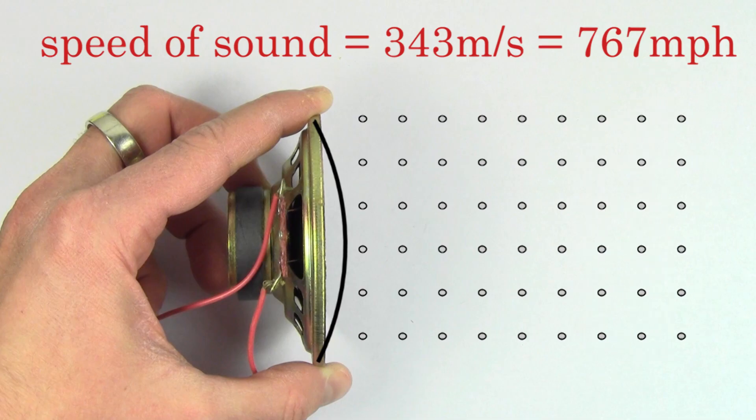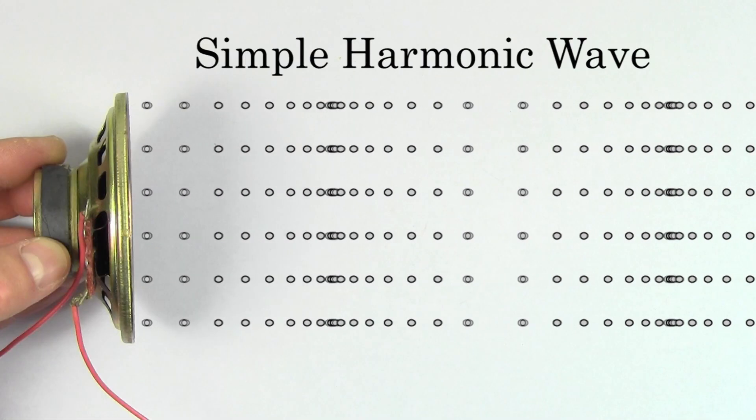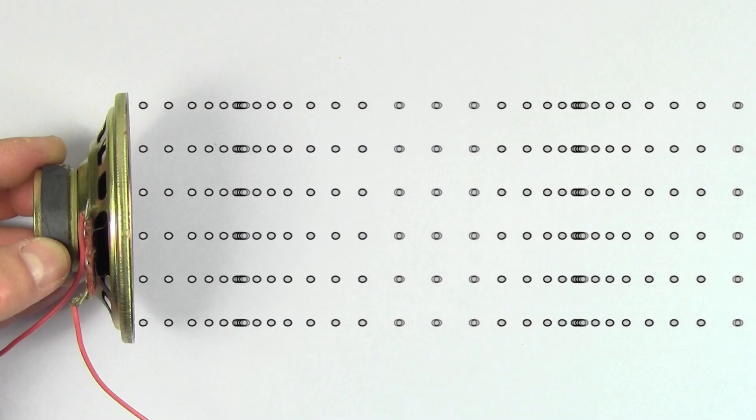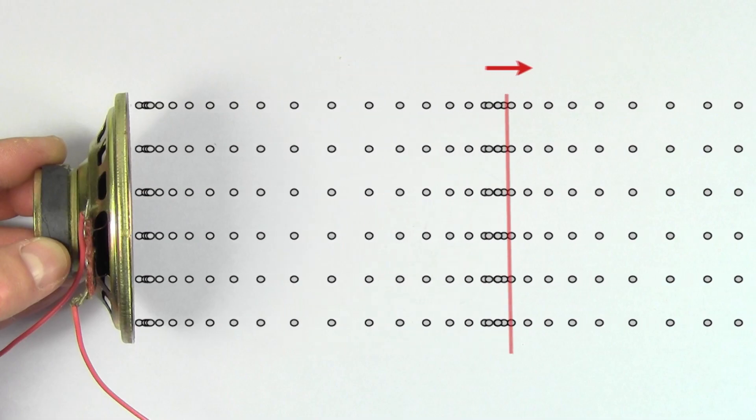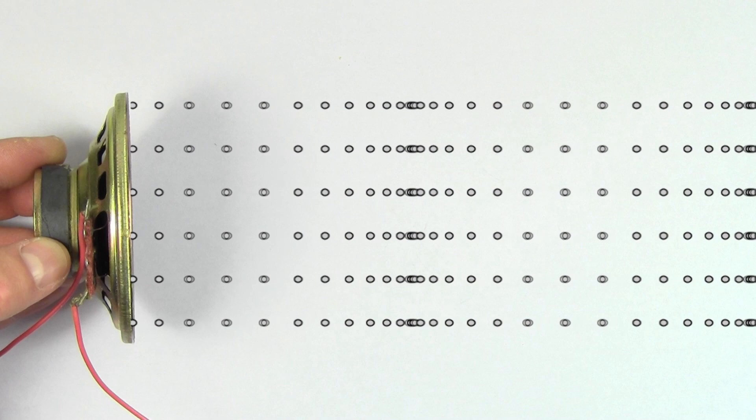We can also watch the speed of sound of a repeating simple harmonic wave. The speed of the wave can again be determined by the speed of the compressed regions as they travel through the medium.